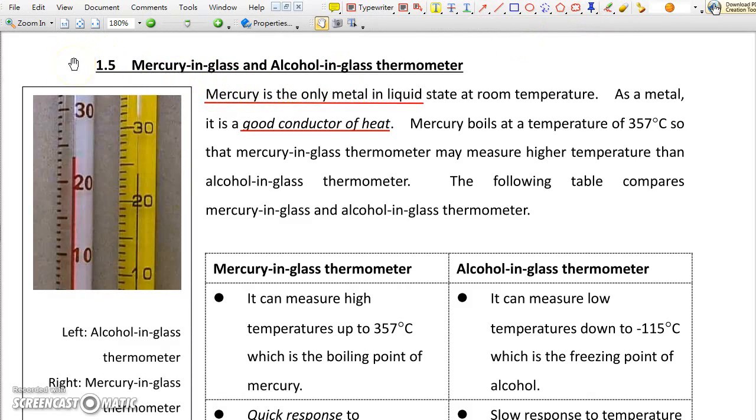1.5 Mercury in glass and alcohol in glass thermometer. You may wonder why we use mercury to make thermometer. Because mercury is the only metal in liquid state at room temperature; all other metals are solid. Mercury is a metal so it is a good conductor of heat and it boils at a high temperature of over 300 degrees Celsius. So mercury in glass thermometer may measure temperature as high as 357 degrees Celsius which is much higher than the boiling point of alcohol.